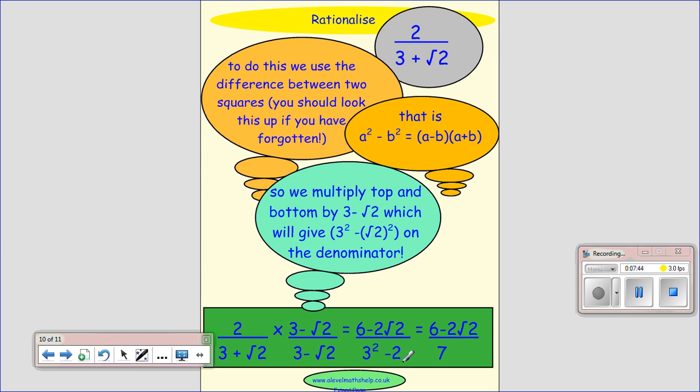And then we multiply this out. We get 3 squared minus 2. And we need to multiply the top out. So we get 2 times 3 is 6, and 2 times minus root 2 is minus 2 root 2. So we get 6 minus 2 root 2 over 7.